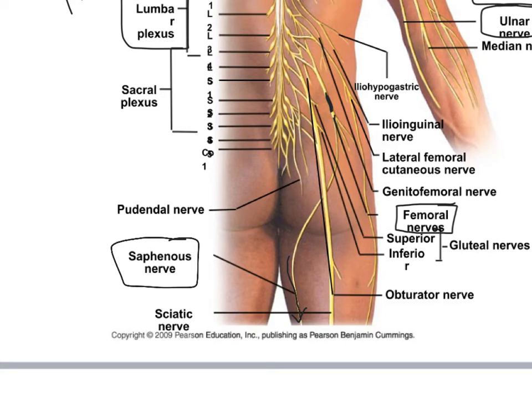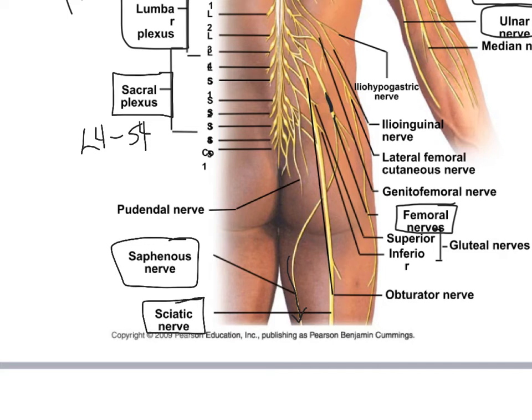Finally, the sacral plexus is a mixture of neurons from L4 to S4. The nerve you need to know coming from the sacral plexus is the sciatic nerve - a large nerve on the posterior thigh.